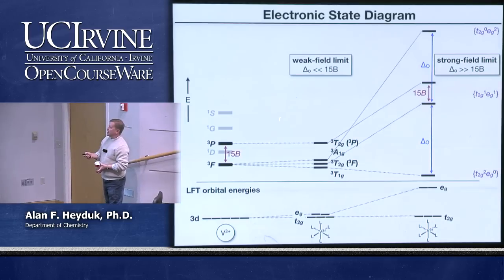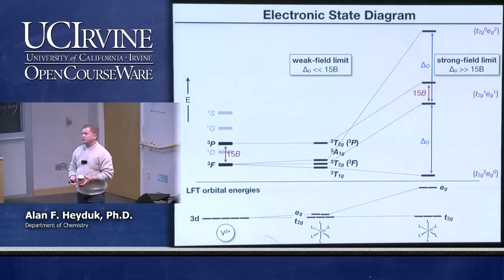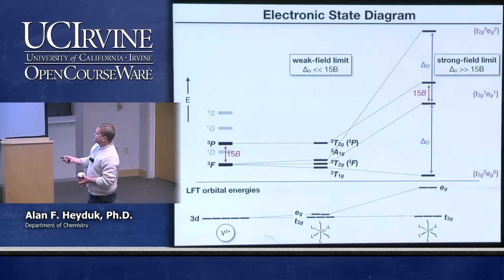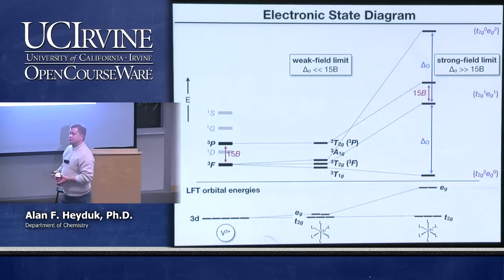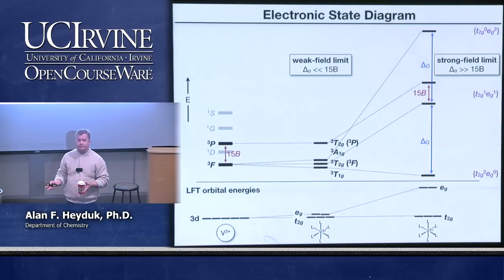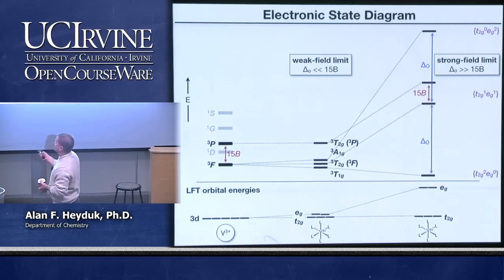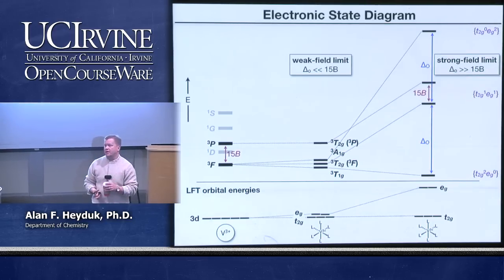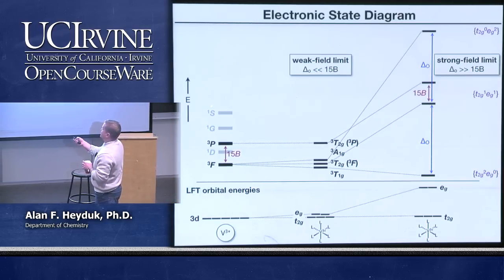We can write very simple energy equations to approximate where each of these microstates will be in energy once we apply the octahedral field. That led us to this diagram. On the far left of the slide we have the free ion — vanadium tri-cation with two D electrons — giving rise to five atomic states. The difference in energy between these atomic states is just electron-electron repulsion; all the D orbitals are at the same energy.